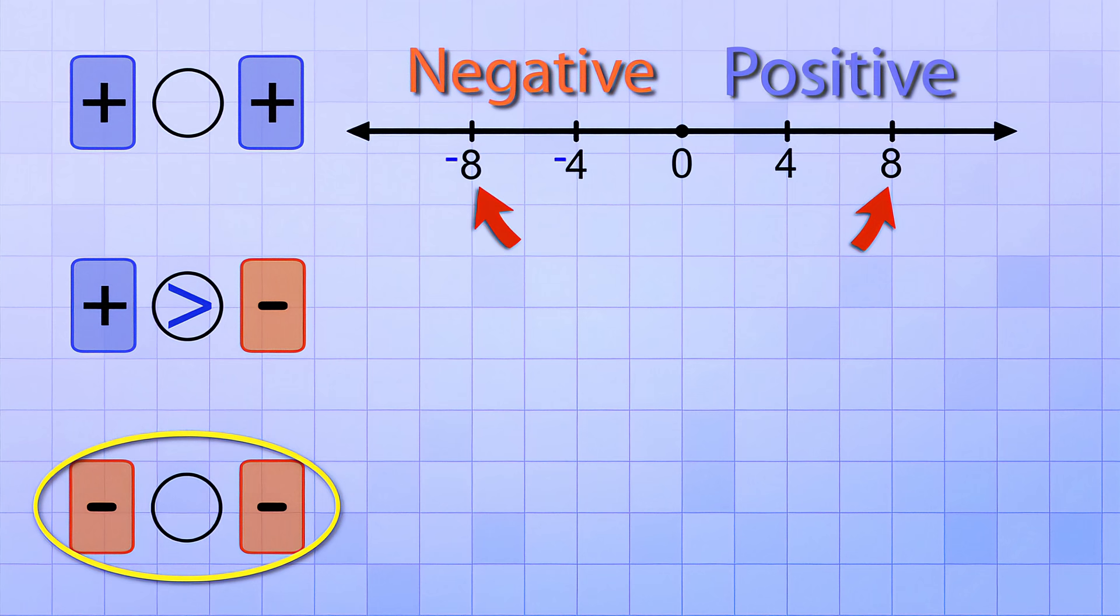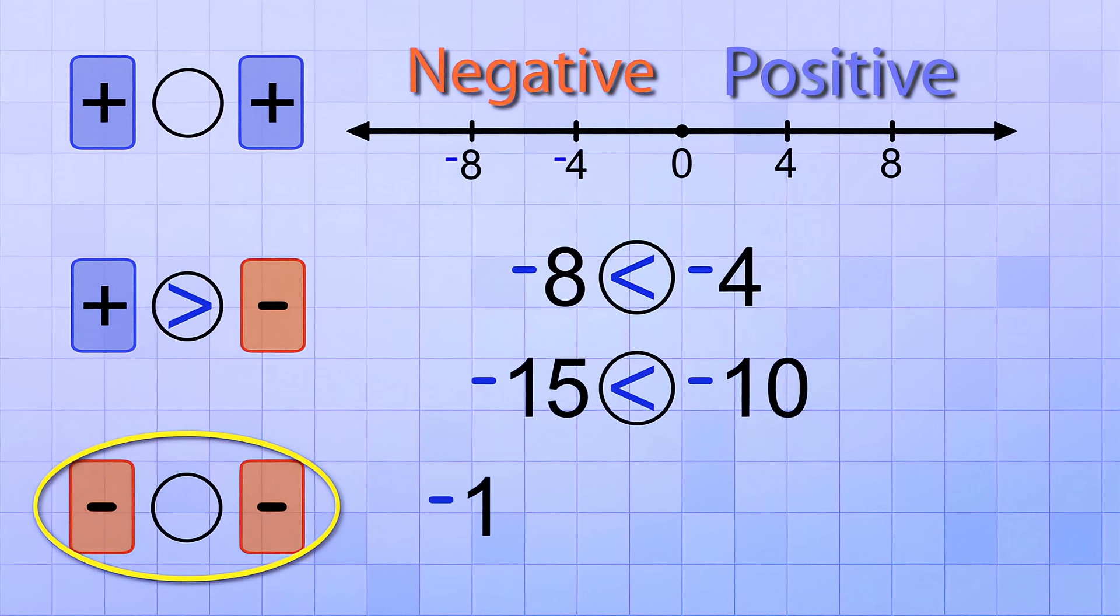So negative 8 is more negative than negative 4, so it's smaller. Negative 15 is more negative than negative 10, so it's smaller. And negative 100 is more negative than negative 25, so it's smaller.